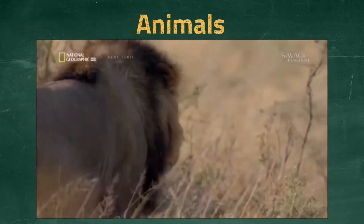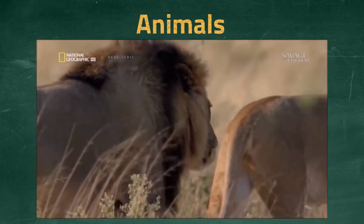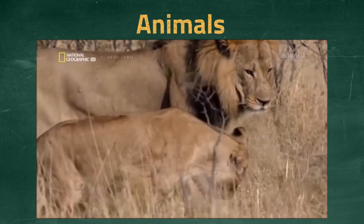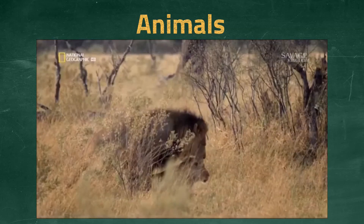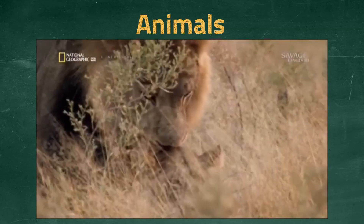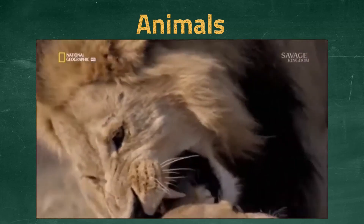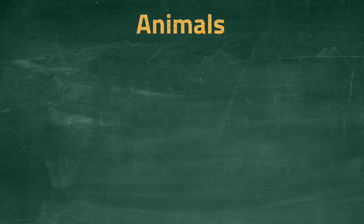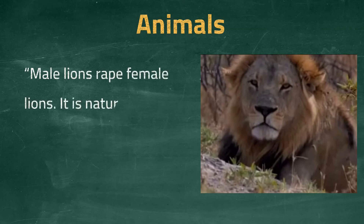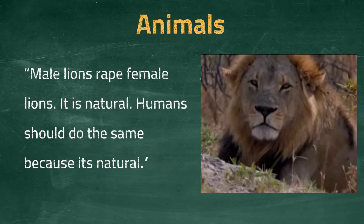The next example concerns animals. In this clip, a male lion from outside the pride takes an interest in the female lion. As the lioness's mate is not there at the moment, this male lion decides to have his way with her. The lioness knows that rejecting him will likely mean her death. As you can see, animals do things that we consider to be strange. Consider the following statement: 'Male lions rape female lions. It is natural. Humans should do the same because it is natural.' Is this a valid argument? As you saw in the film, lions actually do this, so it does exist in nature. Does it then follow that this is a good thing, or that humans should do the same? No. The fact that it exists in nature does not mean that it is good. There is no link between the two. The fact that a lion does something does not mean that a human should do the same thing.